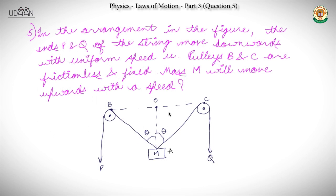Let's do question 5. In the arrangement in the figure, the ends P and Q of the string move downwards with a uniform speed of U. There are pulleys B and C which are frictionless and fixed, and there is a mass M that moves upward as you apply the force.